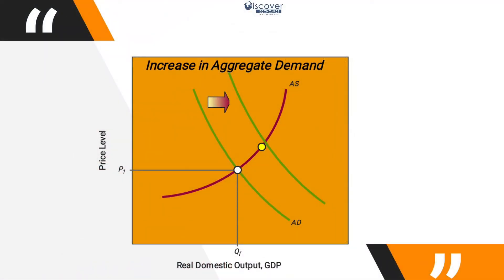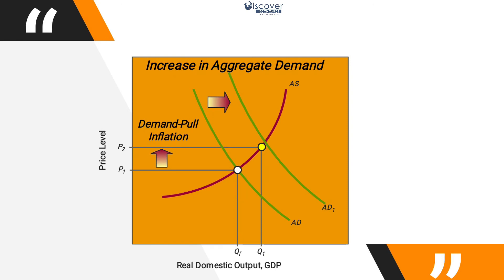Looking at how demand-pull inflation happens: we have aggregate demand and aggregate supply curves. If, for any reason, the aggregate demand curve shifts outward, it causes prices to go up — that is demand-pull inflation. Because we are unable to shift the supply curve to match, we face demand-pull inflation.